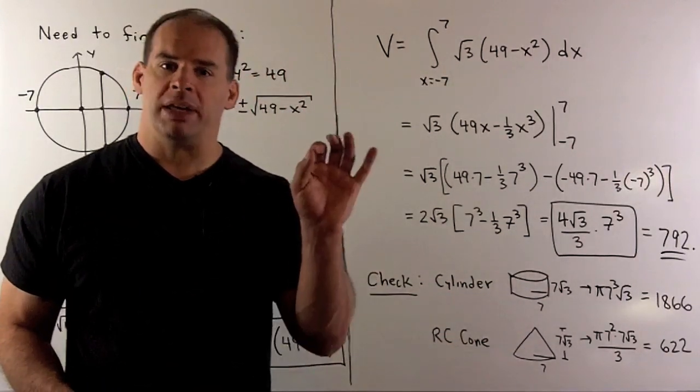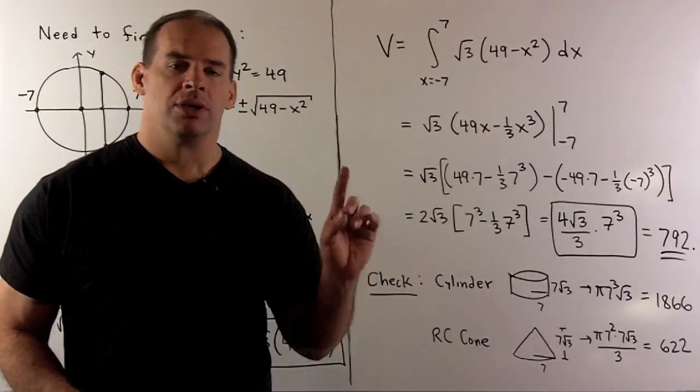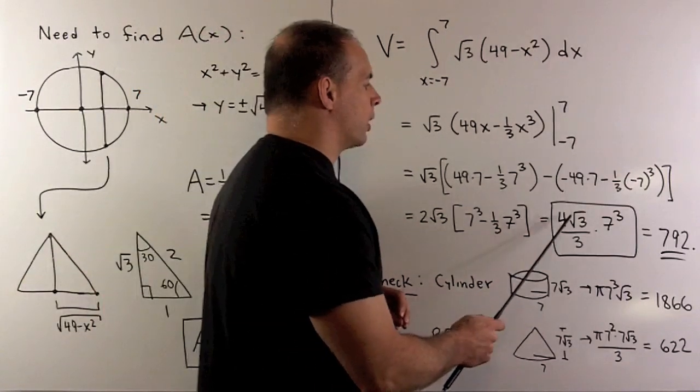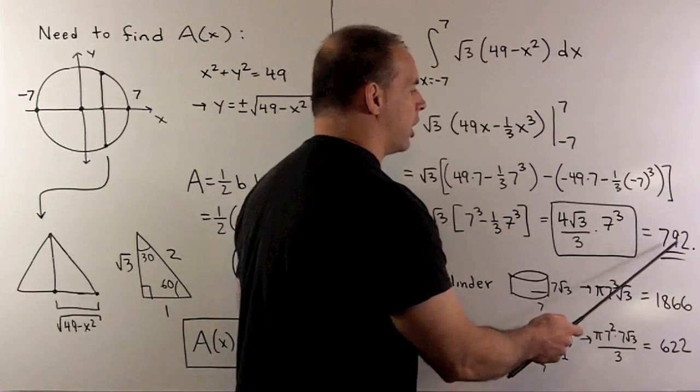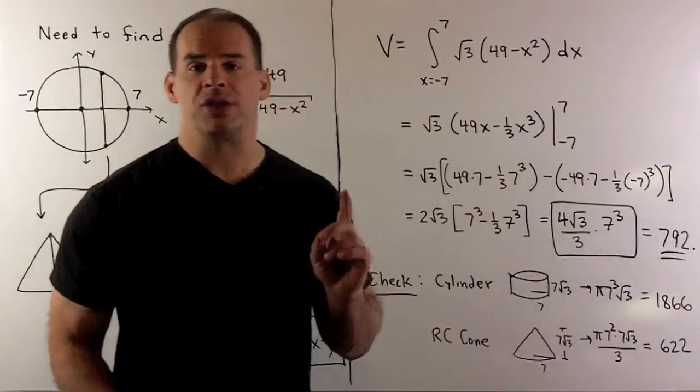When we simplify, we be careful with the parentheses. That gets us to 4 square root of 3 times 7 cubed divided by 3. That's approximately 792. That's our problem.